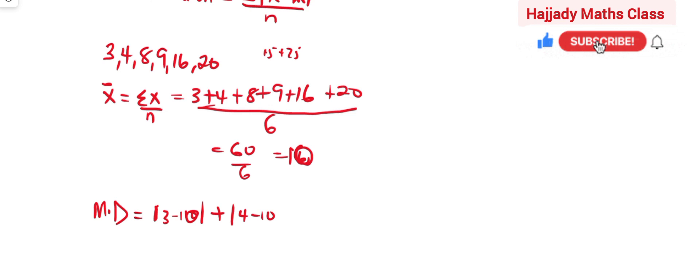plus the next observation, which is |8 minus 10|, plus the next observation, which is |9 minus 10|, plus the next observation, |16 minus 10|, and the last one, which is |20 minus 10|.